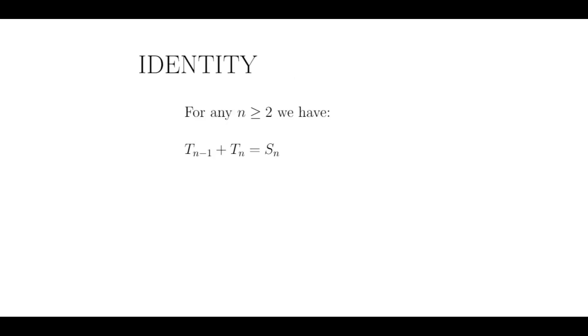Now I'd like to show an identity that relates the triangle numbers to the square numbers. Given any two consecutive triangular numbers, their sum will be a square number. More specifically, for any n at least 2, Tn minus 1 plus Tn is equal to n squared, which is the nth square number Sn.